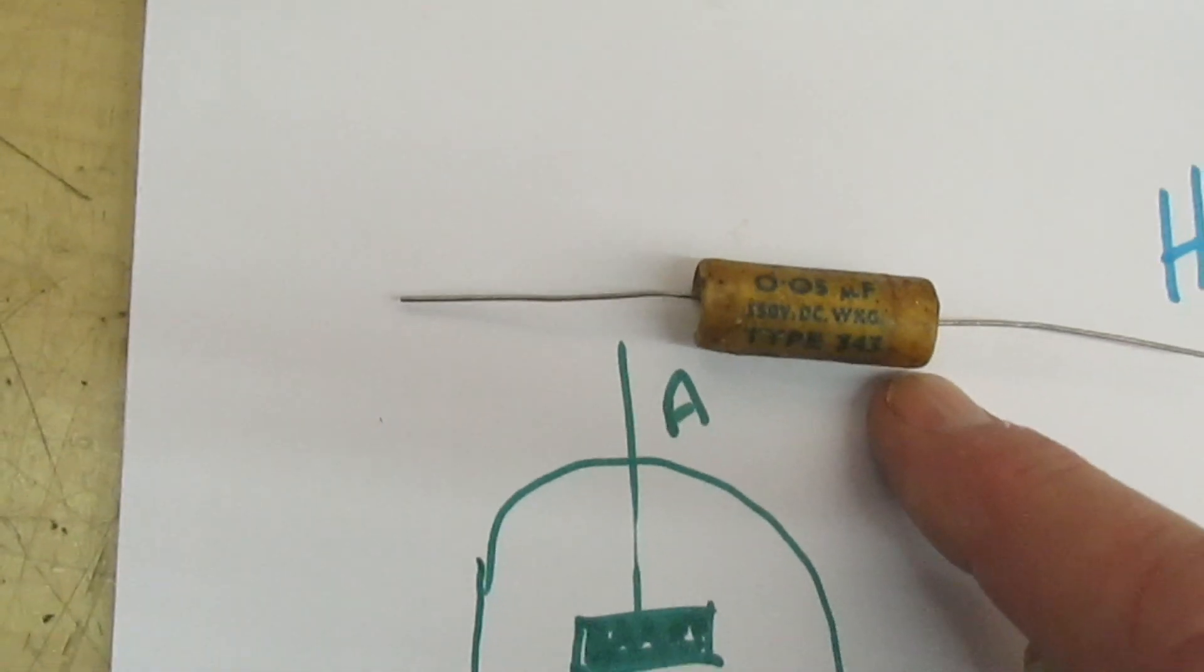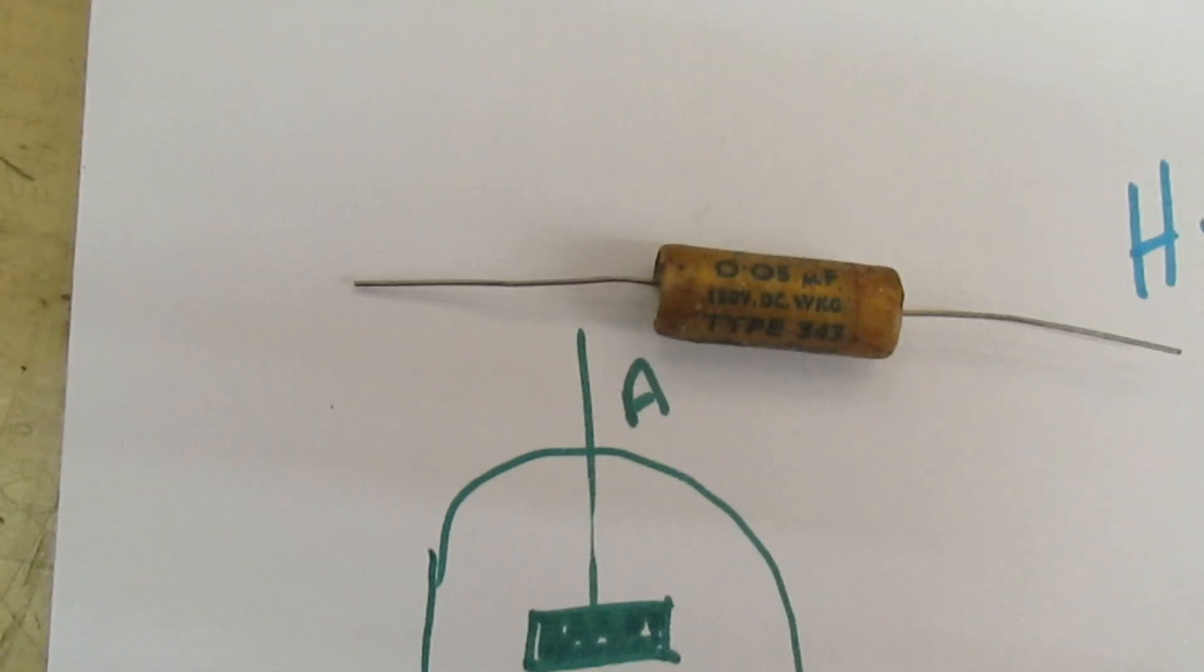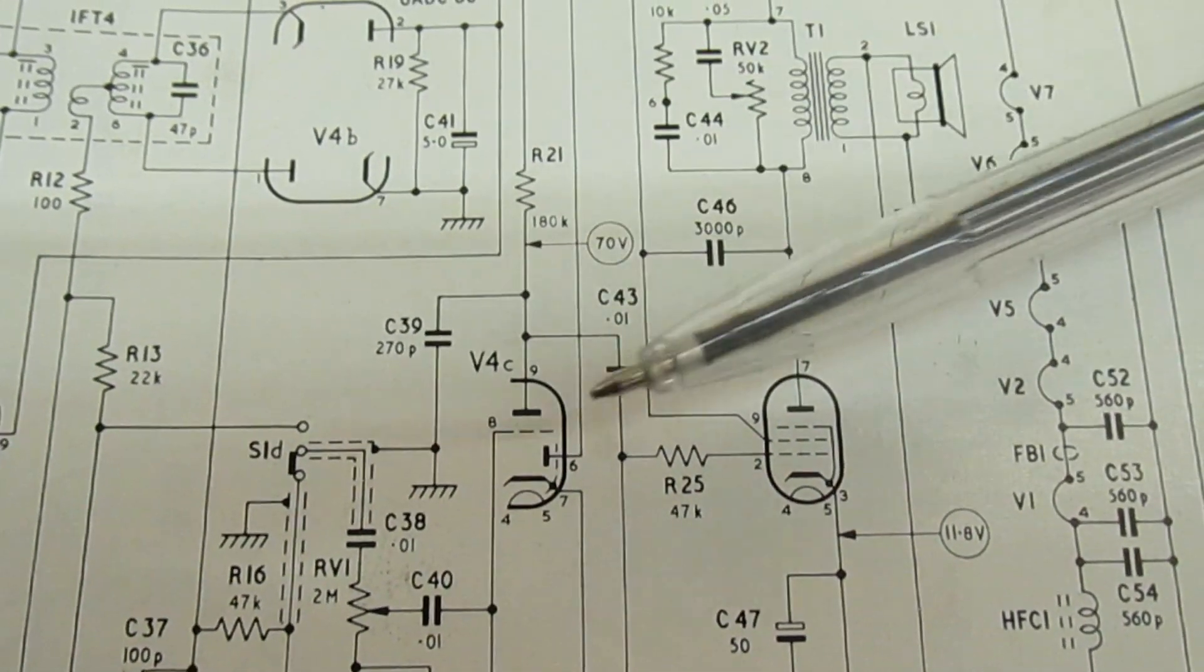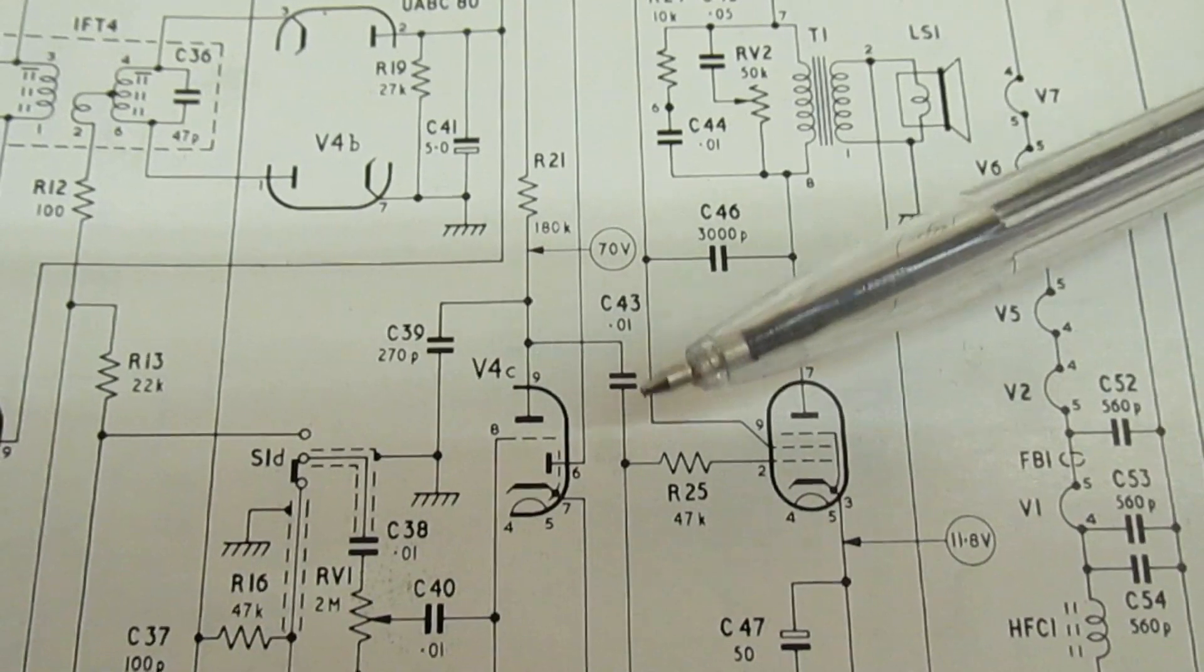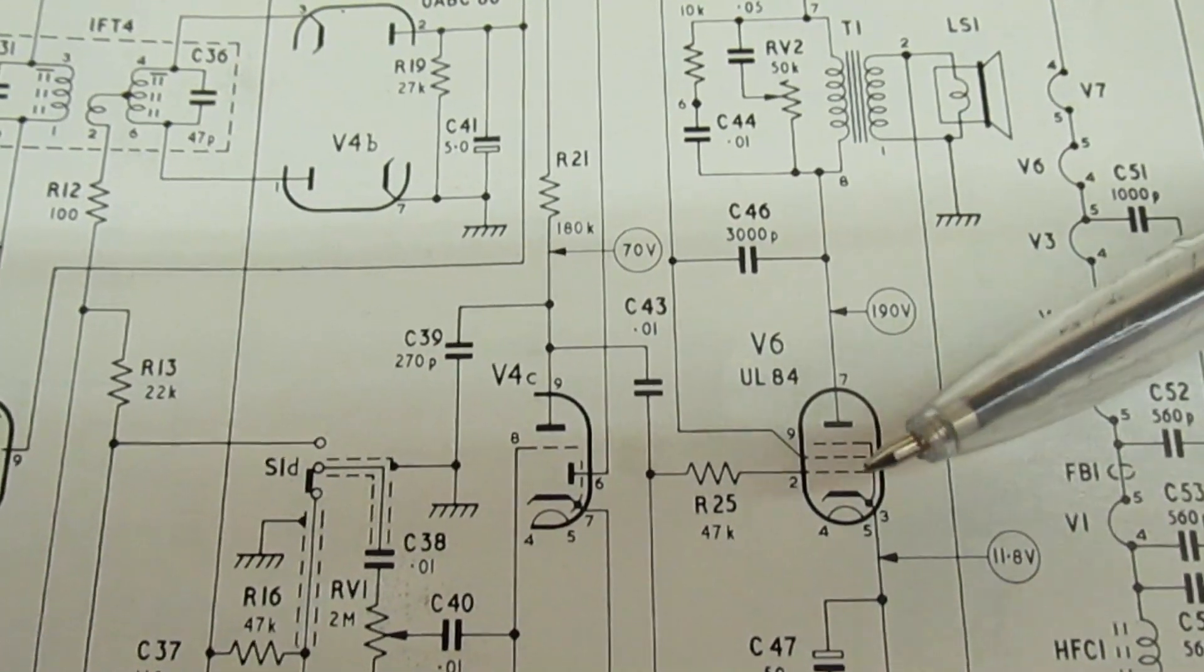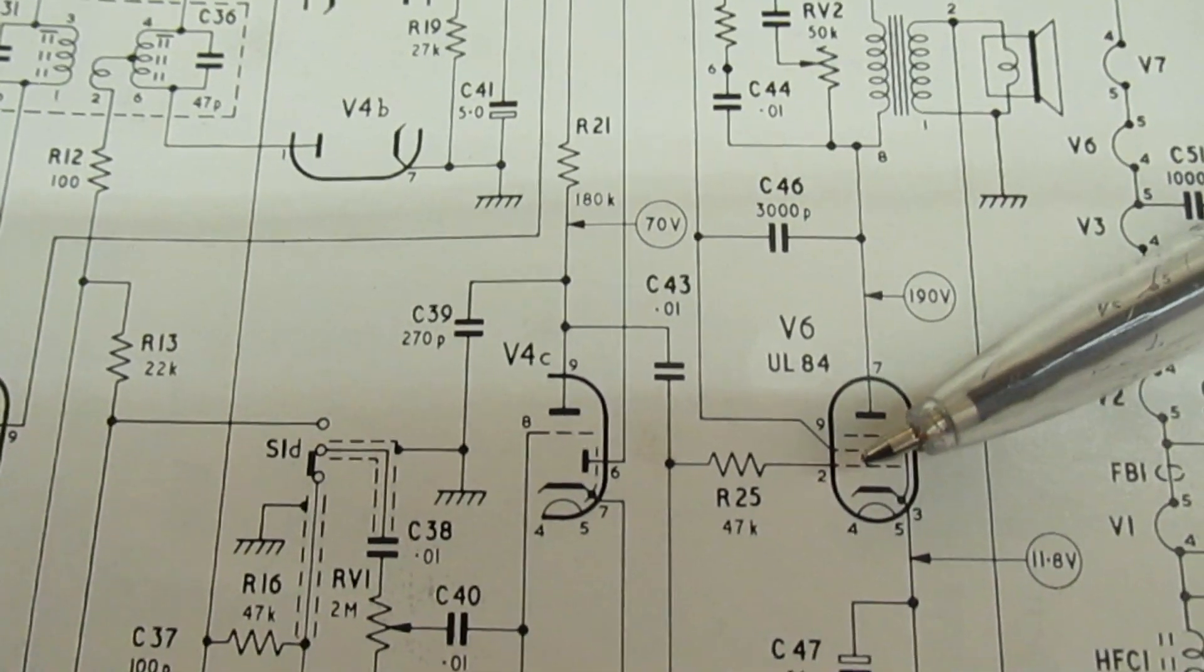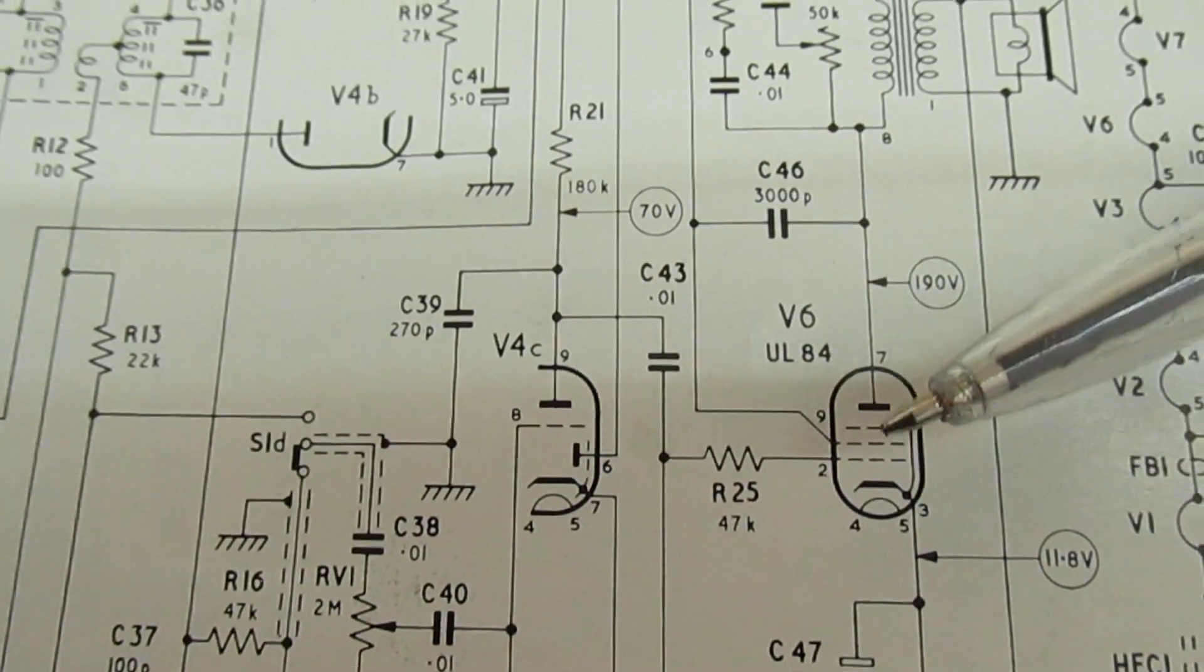Quite often in the audio output stage there'll be another one of these that couples the grid of the audio output valve. If we take a look here, that's the anode and that will be to positive voltage. We don't want any positive voltage on grid 2, the control grid of the audio output valve.